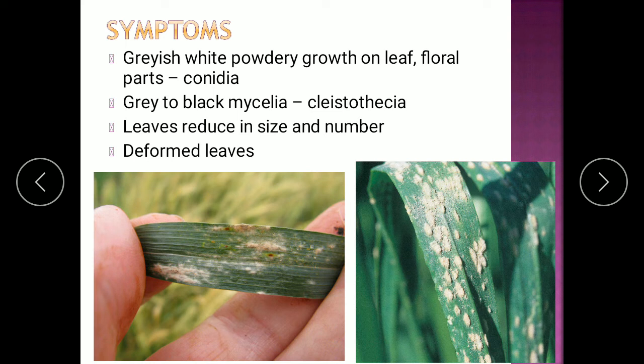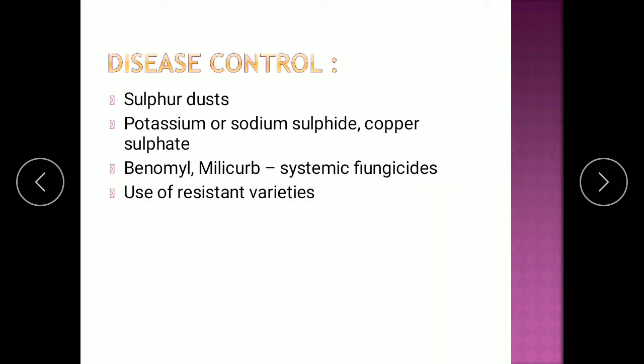The symptoms of the disease include grayish-white powdery growth on the leaf or on the floral parts of the plant — this is due to the conidia. There can also be gray to black mycelia found on the plants, due to the Cleistothecium following the sexual cycle. This can lead to leaves reduced in size and number, and deformed leaves. Disease control includes application of sulfur dust, potassium or sodium sulfide, or copper sulfate. Systemic fungicides like benomyl or milcurb and use of resistant varieties are also effective.